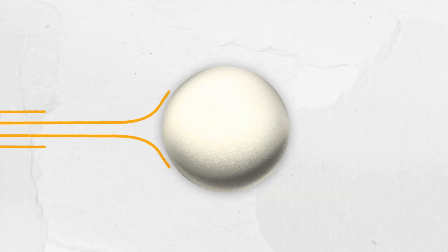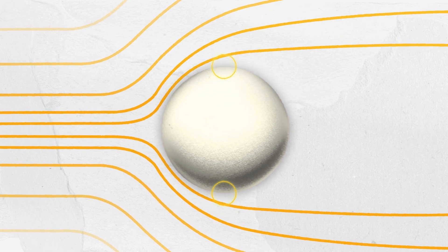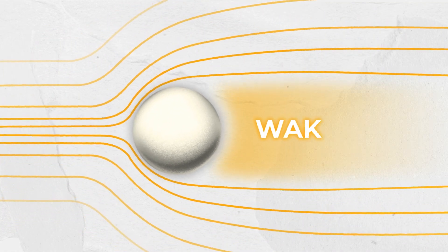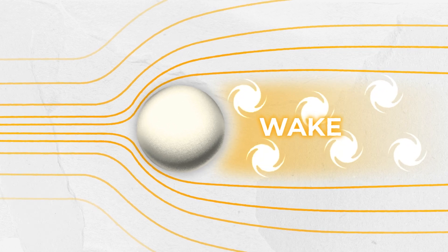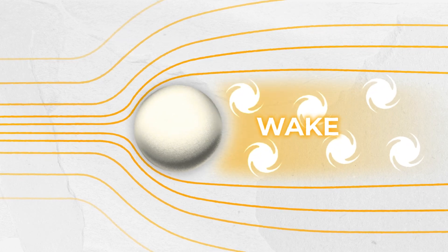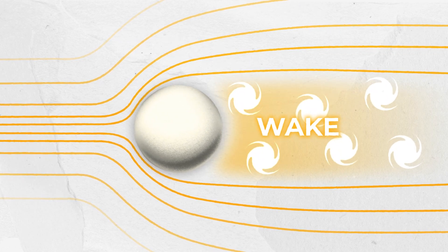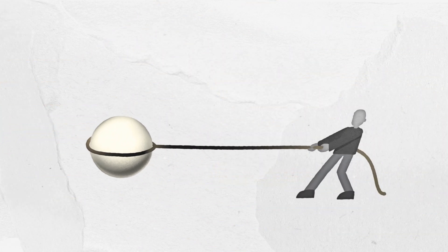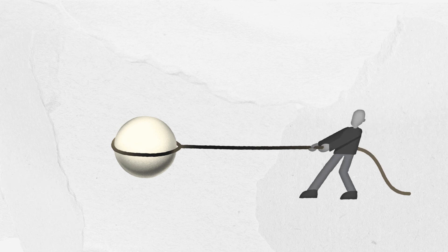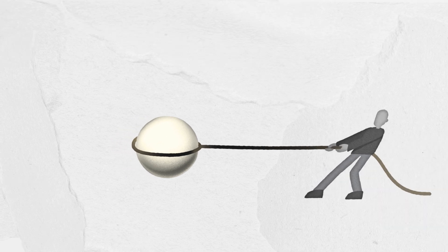Air flow around a smooth golf ball is layered and smooth. The air quickly separates from the ball, leaving a large space — also called the wake — for vortices to create drag. Drag acts as a slowing force, as if someone was pulling on the ball from behind.